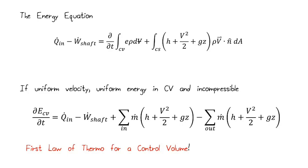If we have a uniform velocity, meaning that this integral does not have a variable velocity throughout our control volume, if we have uniform energy throughout the control volume, meaning that we can bring the energy outside of our integral here, and it's incompressible, we can get ourselves to this equation.